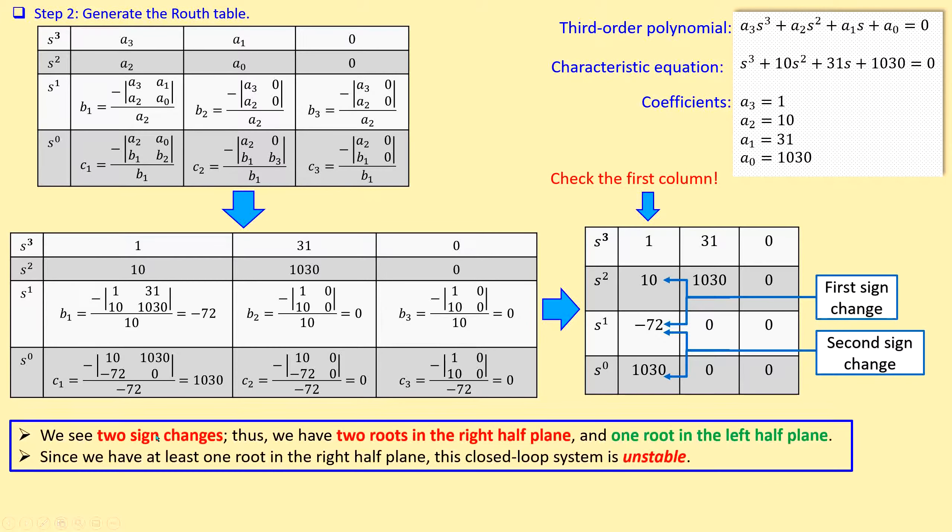Since we have two sign changes, thus we have two roots in the right half plane and one root in the left half plane. Why? Because this is a third order system and I need three roots. If I have two roots in the right half plane, I need a root in the left half plane. I have two roots on the right half plane and one root in the left half plane, in total three roots.